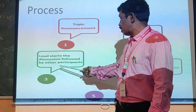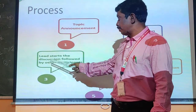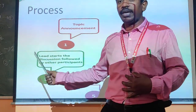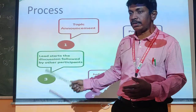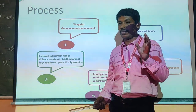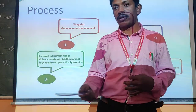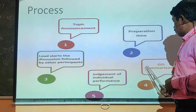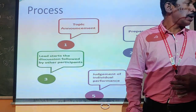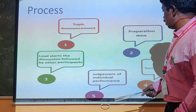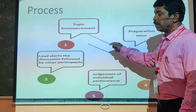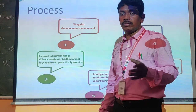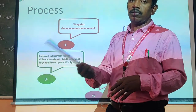Students start the discussion followed by other participants. One candidate should be the initiator — not leader, initiator. One who starts the discussion is the initiator. You should have thorough awareness of the topic so you are able to start it. And there should be summarizing. It should be summarized and followed by judgment of individual performance. Finally, he will judge the performance of each individual to determine if the candidate is suitable, by participating in group discussion.